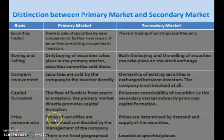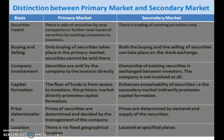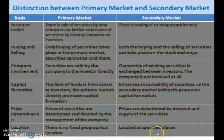Price determination: In the primary market, the price of securities is determined and decided by the management of the company. In the secondary market, prices are determined by the demand and supply of securities. Regarding location, there is no fixed geographical location in the case of the primary market, but for the stock market, it is located at a specified place.